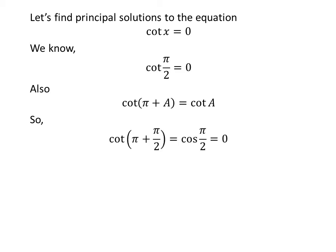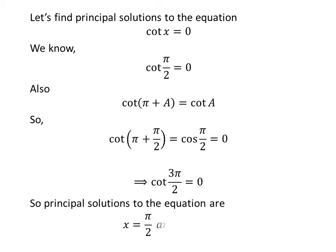Applying the above identity, cotangent of pi plus pi over 2 is equal to 0. Since pi plus pi over 2 equals 3 times pi over 2, we get cotangent of 3pi over 2 is equal to 0. So the principal solutions to the equation cotangent of x equals 0 are pi over 2 and 3pi over 2.